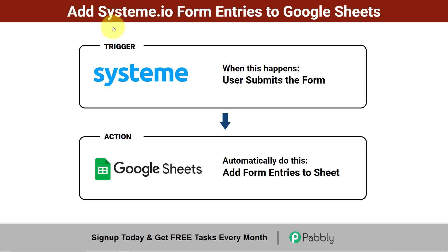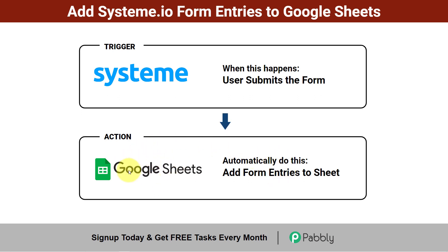In this video I will show you how to add Systeme.io form entries to Google Sheets automatically. Systeme.io is an all-in-one marketing platform. I have created a lead capture form and I want that whenever any user submits that form, those form entries should be added automatically into Google Sheets so that I don't have to manually export the data and import it. If you also want to automate this process, come with me and I will show you everything step by step.